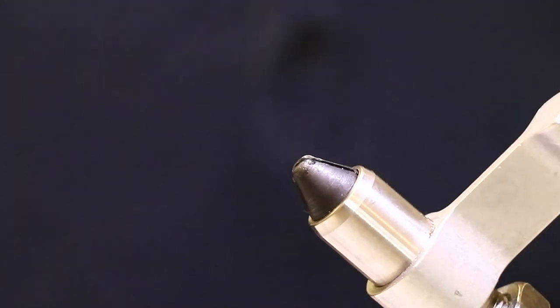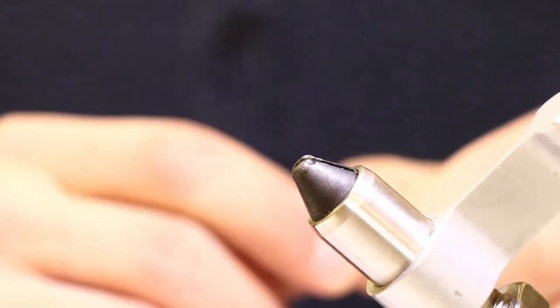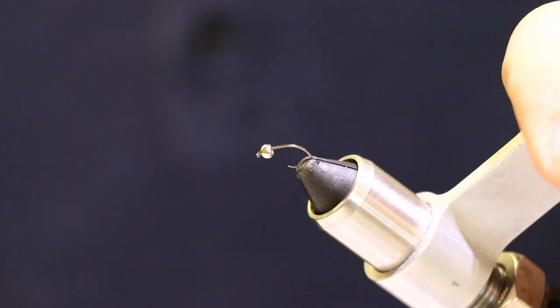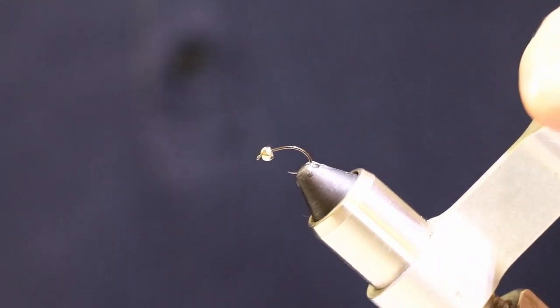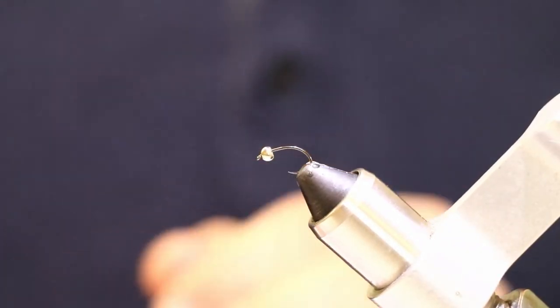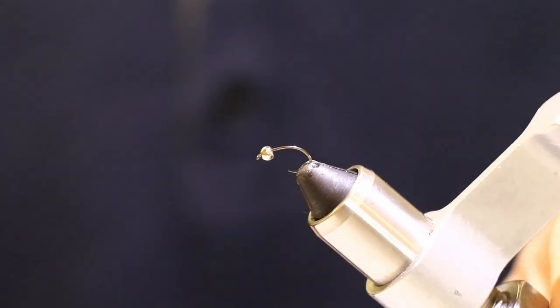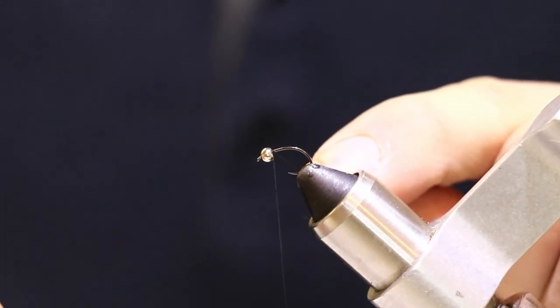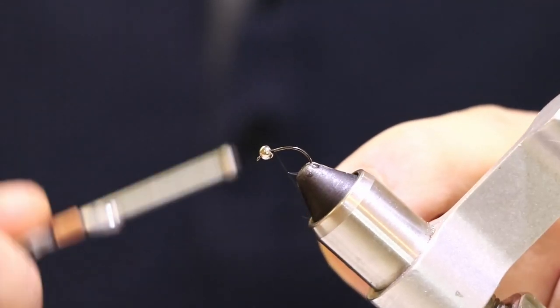Alright to get started off you're going to have to put your bead on with your hook. There we go. So there we go. Alright so to get started off here I'm going to take my 70 odd thread. There we go. And what we're going to simply do is just going to make a couple wraps right behind the bead.